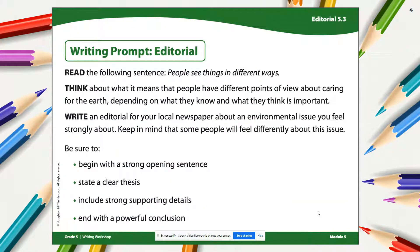In this lesson, you will begin to write an editorial about an environmental topic. This is the writing prompt for your editorial. Remember our focus sentence: people see things in different ways. Think about what it means that people have different points of view about caring for the earth, depending on what they know and what they think is important.